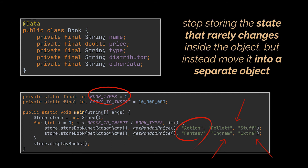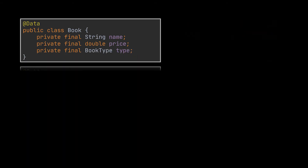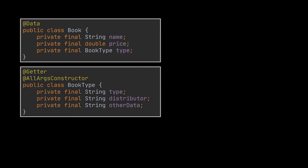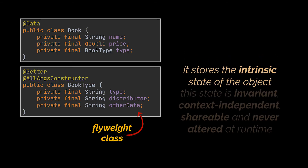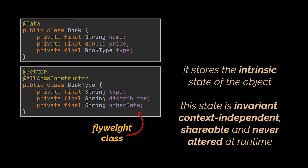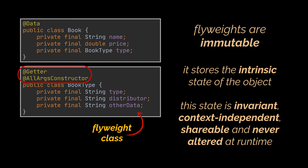In this case, the Flyweight pattern suggests that you stop storing the state that rarely changes inside the original object, but instead move it into a separate object. Let's move our three repeating attributes to a new class and name it BookType. This class is what we call the flyweight class, and it stores the intrinsic state of the object — this state is invariant, context-independent, shareable, and never altered at runtime. Since the same flyweight object will be used by many books, the BookType class should initialize its state just once via constructor parameters and shouldn't expose any setters or public fields.